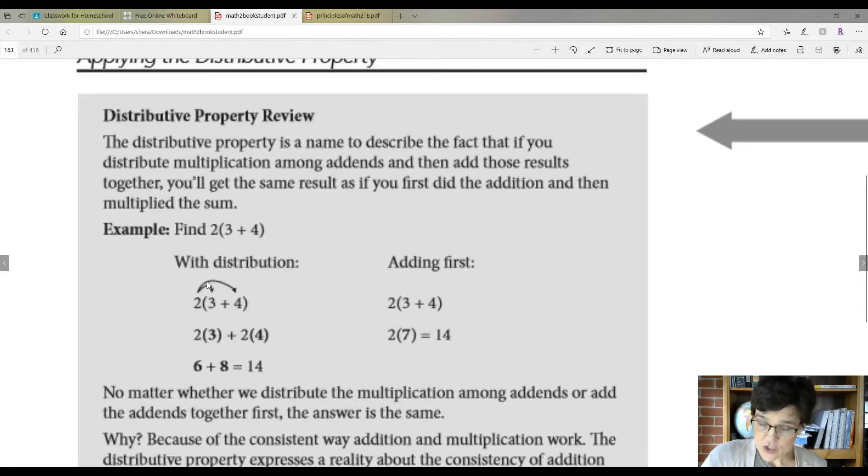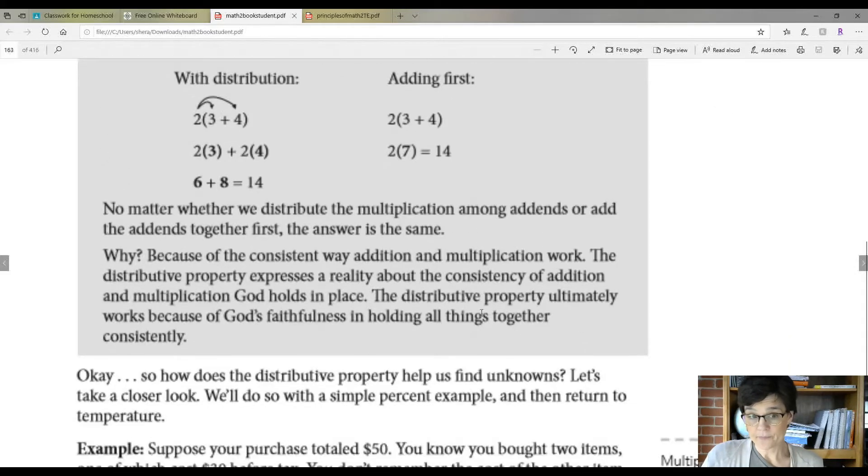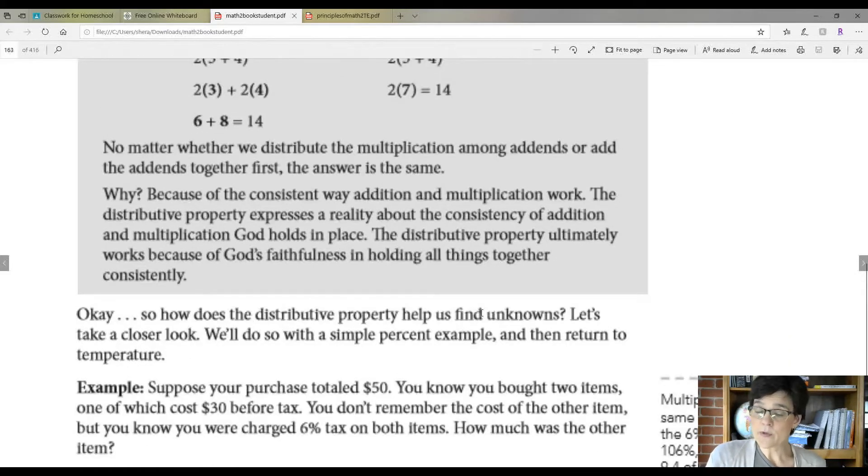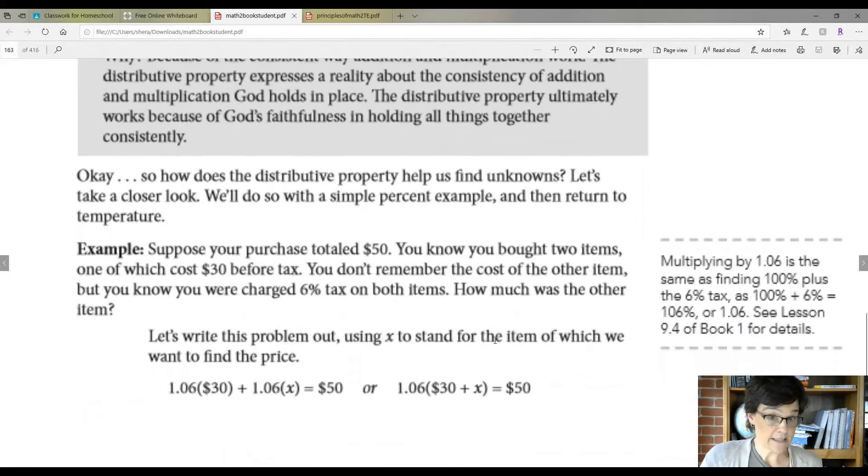If we did addition first, like we did yesterday, you would do what's in parentheses and then you would multiply. With distribution, you would do this 2 times 3 plus 2 times 4. And then you add those together, you get 14, you get the same answer. No matter whether you distribute or use multiplication and you add the addends, you're going to get the same answer because God's way is consistent and because that's how he's made it and everything he holds in place.